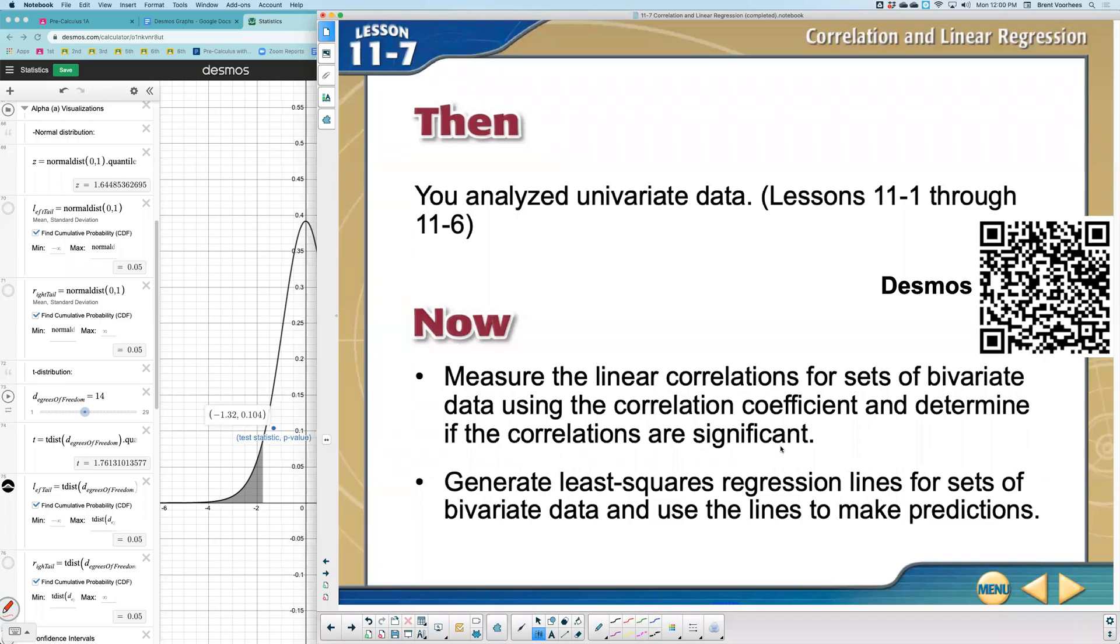All right. Well, 11.7, as you can see in the top corner, we're going to be talking about correlation and linear regression, stuff that you've seen throughout your time in algebra, at least in Dallas Independent School District. You should have seen this.